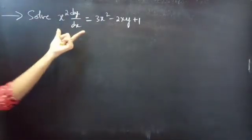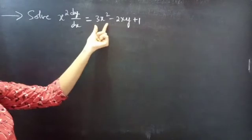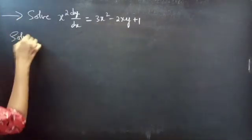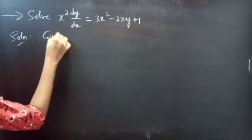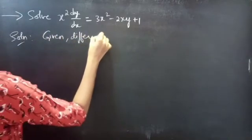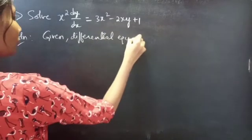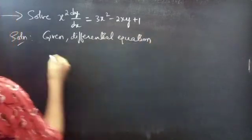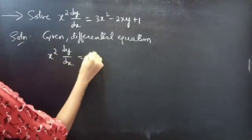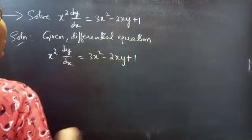Problem. Solve x squared into dy by dx equals to 3x squared minus 2xy plus 1. Solution. Given differential equation: x squared into dy by dx equals to 3x squared minus 2xy plus 1.